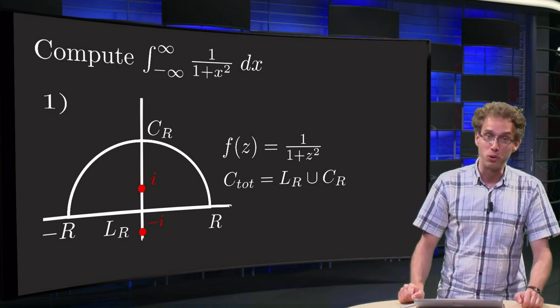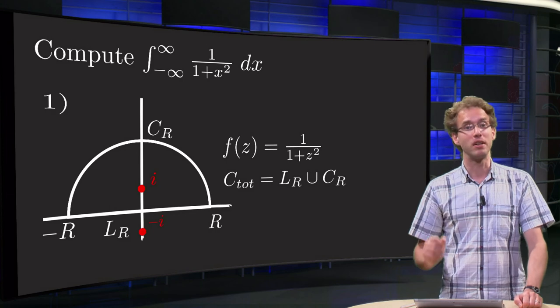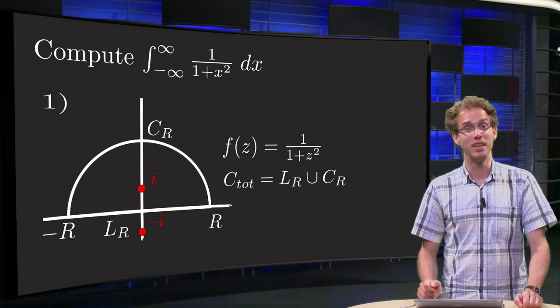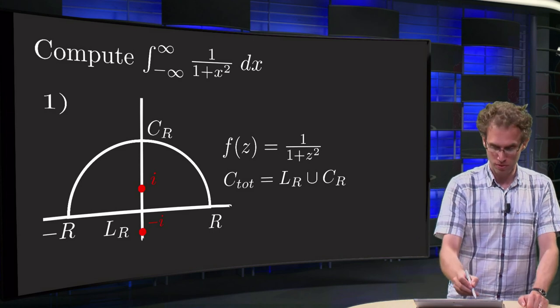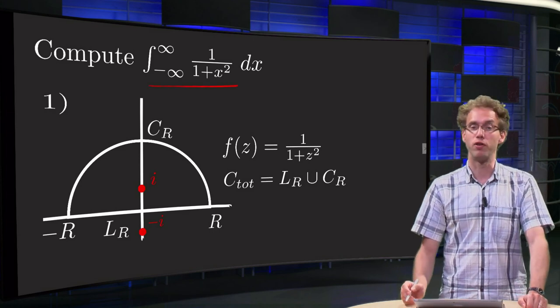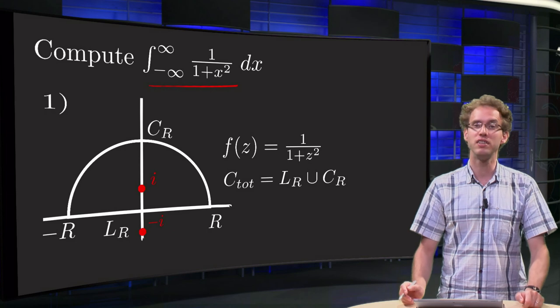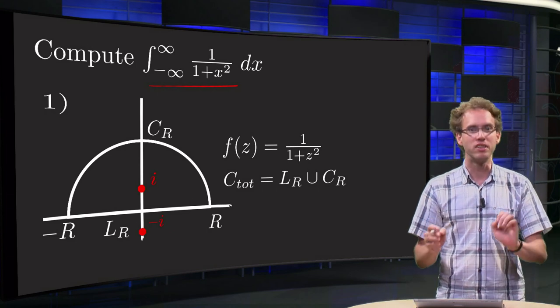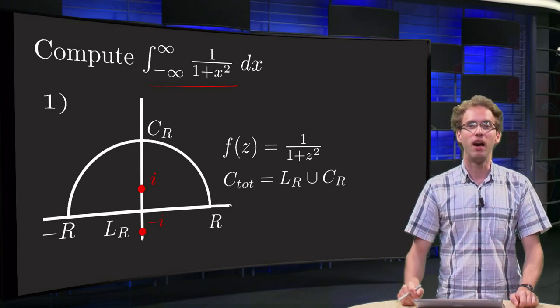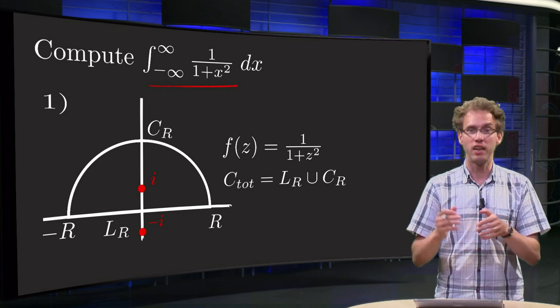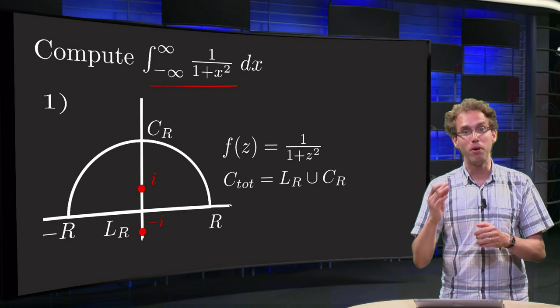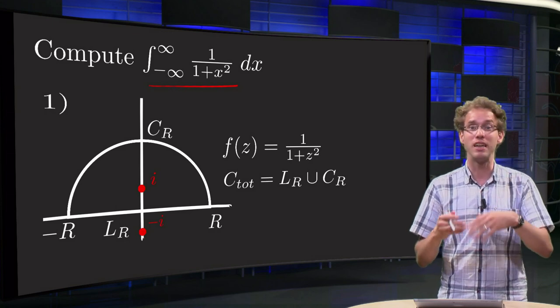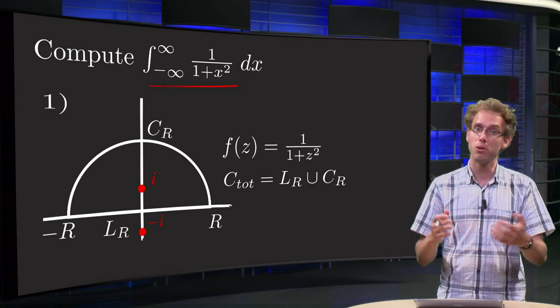We have seen the main idea of contour integration. Let us look at an explicit example to see how this works out in practice. So our task is to compute the following integral: 1 over 1 plus x squared from minus infinity to infinity. I know you can do that by just taking the antiderivative as well, but that's not the point of this video. The point is that you just see all the steps in an easy example.